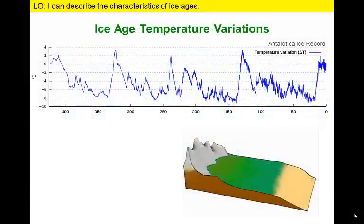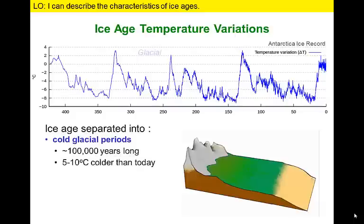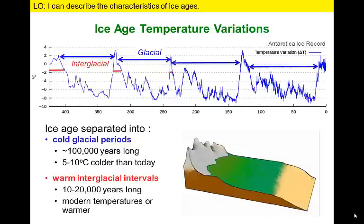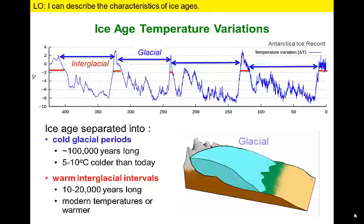Contrary to what many people think, ice ages are not continuous times of extremely low temperatures. For example, examine this graph to see how temperatures vary during the last 450,000 years — this includes the most recent part of the Pliocene-Quaternary ice age. As you can see, an ice age is actually characterized by a series of shorter climate cycles composed of alternating pulses of warmer and colder temperatures. We can observe a series of longer cold intervals known as glacials that are interrupted by shorter warm intervals known as interglacials.